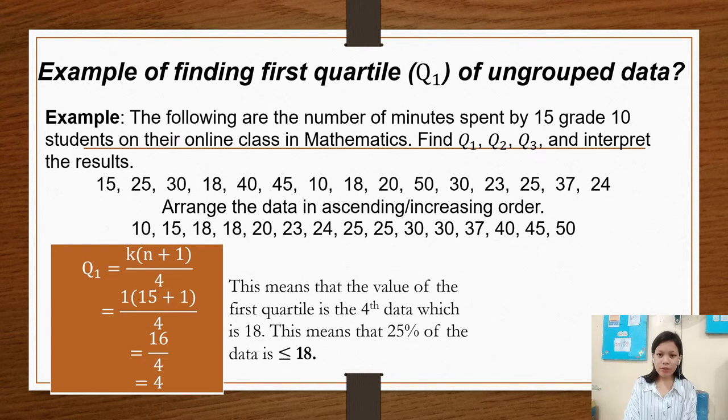Example of finding first quartile of ungrouped data. The following is the number of minutes spent by 15 grade 10 students in their online class in mathematics. Find Q sub 1, Q sub 2, and Q sub 3 and interpret the results. So we have here the data: 15, 25, 30, 18, 40, 45, 10, 18, 20, 50, 30, 23, 25, 37, 24.